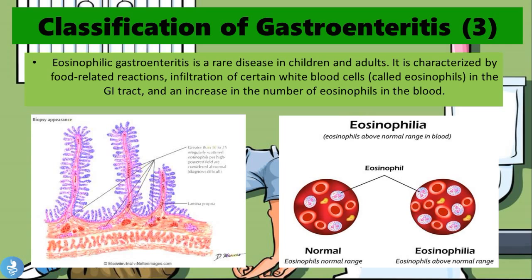Eosinophilic gastroenteritis is a rare disease in children and adults. It is characterized by food-related reactions, infiltration of certain white blood cells called eosinophils in the GI tract, and an increased number of eosinophils in the blood. The eosinophils are part of the white blood cell family and are usually elevated when our body is undergoing an allergic response. In this case, the invader the body is trying to fight is certain types of food that we may ingest, and the large amount of eosinophils in the blood tells us an allergic response is currently going on.